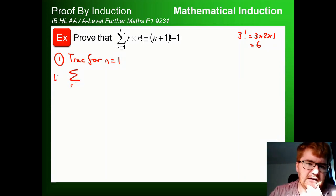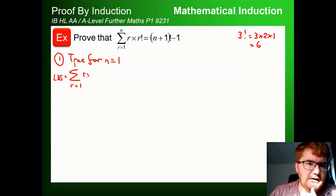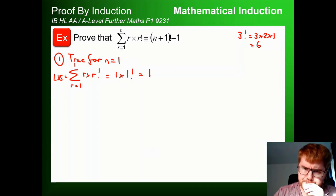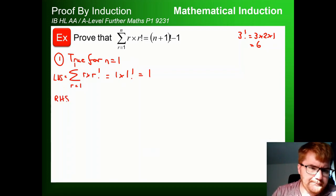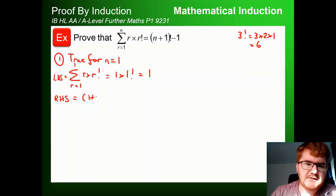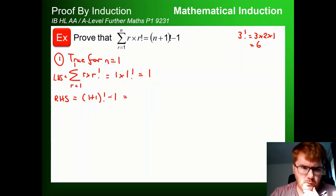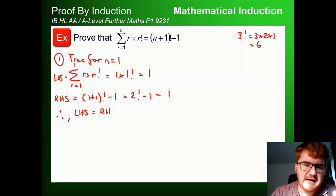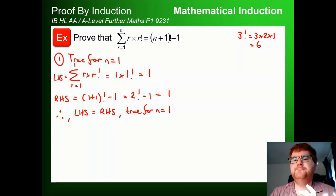For n=1, the left-hand side is the sum from r=1 to 1 of r·r!, which is 1×1! = 1×1 = 1. The right-hand side is (1+1)!−1 = 2!−1 = 2−1 = 1. The left-hand side equals the right-hand side, so it is true for n=1.